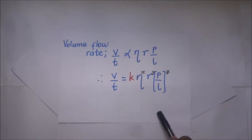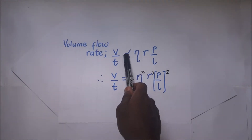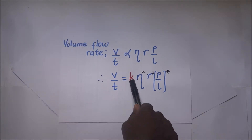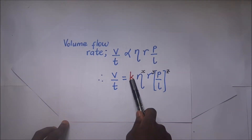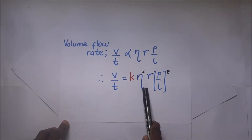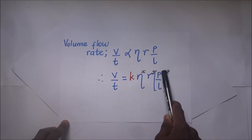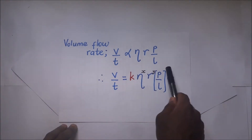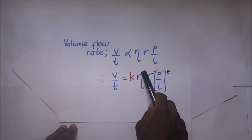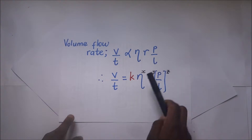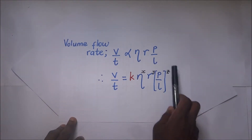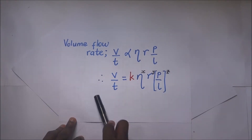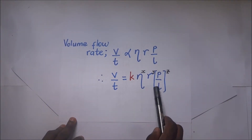To remove this proportionality sign we introduce a constant of proportionality K. This gives us: volume flow rate equals K times coefficient of viscosity to the power x, times r to the power y, times pressure gradient to the power z. We need to find the values of x, y, and z using dimensional analysis.